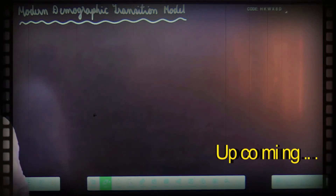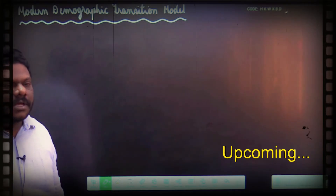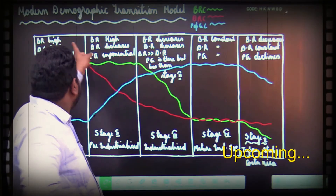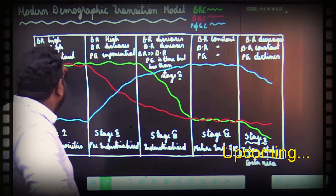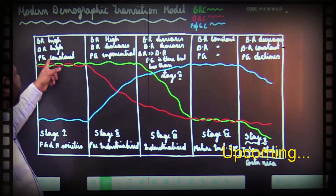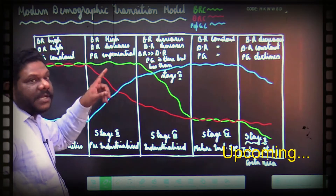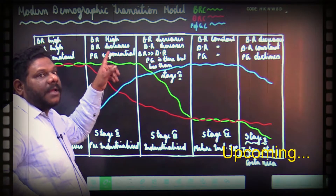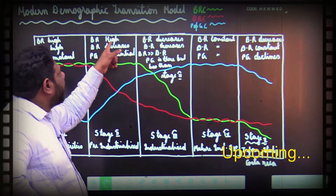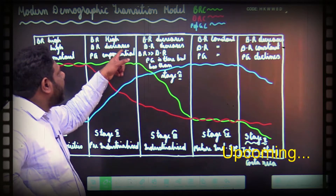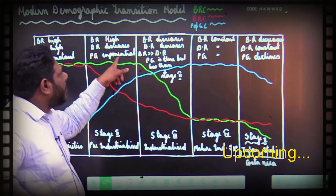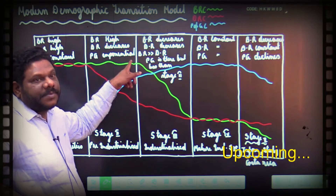This is not a theory — this is based on some authentic data collected from all over the world. Birth rate high, death rate high: population growth constant. Birth rate high, death rate decreases: population growth exponential.